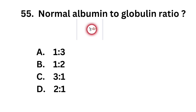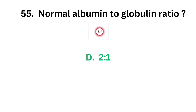Question number 55. Normal albumin to globulin ratio. Option A: 1 is to 3. Option B: 1 is to 2. Option C: 3 is to 1. Option D: 2 is to 1. The correct answer is option D, 2 is to 1. Normal albumin globulin ratio is 2 is to 1.